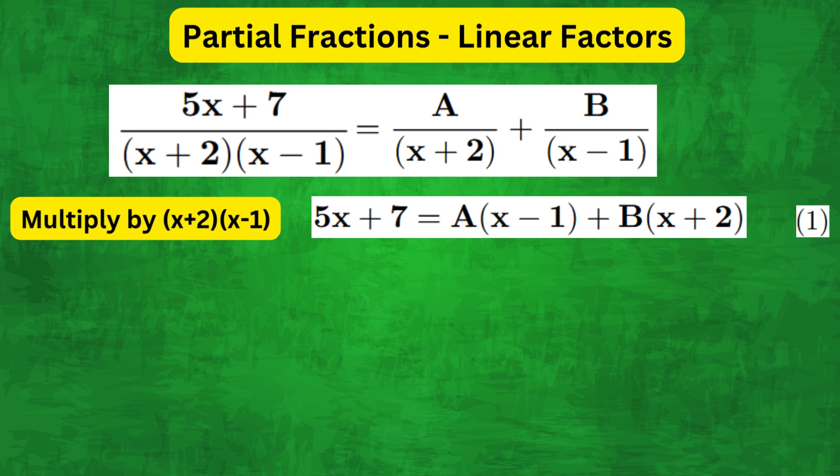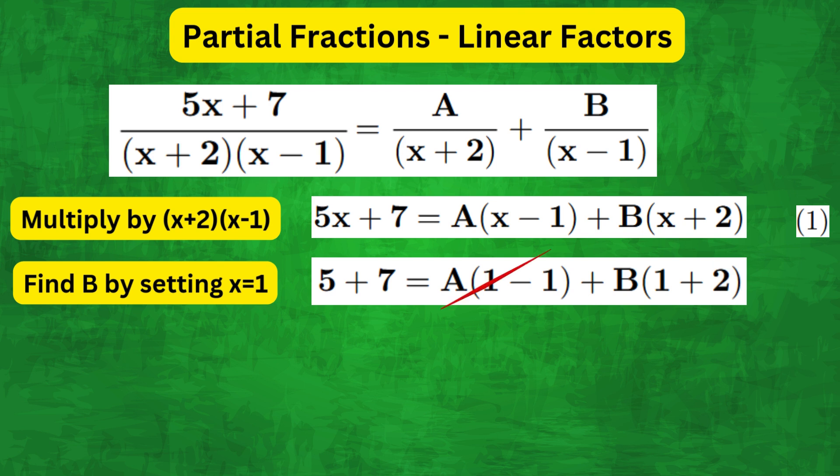To find b we can simply set x equals 1 on both sides of equation 1, so this a term cancels and we get 12 equals 3b, which gives us b equals 4.